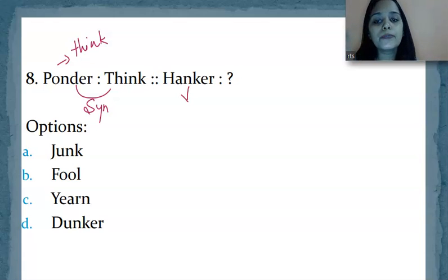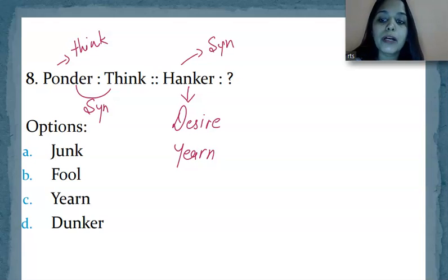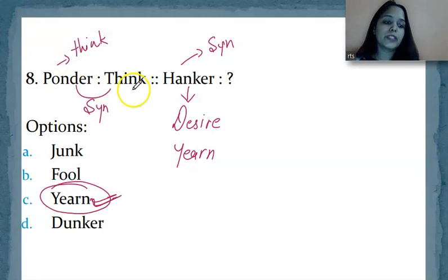So this hanker word means to have desire for something. Having desire for something, yearning for something. Like you want to purchase a car, there's a car you want that you must purchase. Or any such thing in life that you desire to have. That is called what? Hanker. In the same way, you have to find out the synonym word for hanker. You can see in the options you have the word yearn. So the correct answer here will be yearn.